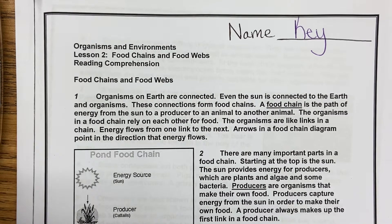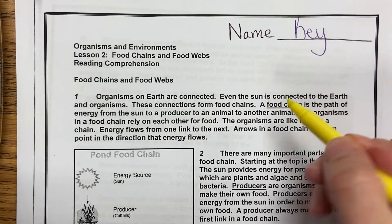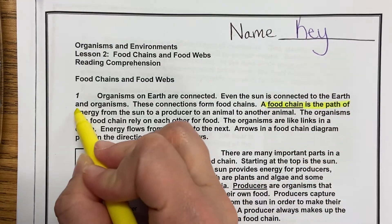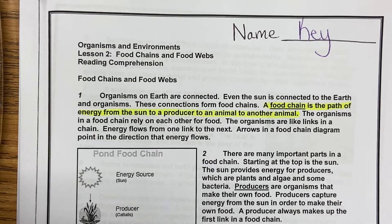The concept that we're working on this week is food chains and food webs, which is what I found a passage over. Paragraph one: Organisms on earth are connected. Even the Sun is connected to the earth and organisms. These connections form food chains. A food chain is the path of energy from the Sun to a producer to an animal to another animal. The organisms in a food chain rely on each other for food. The organisms are like links in a chain. Energy flows from one link to the next. Arrows in a food chain diagram point in the direction that energy flows. In this paragraph we had one vocabulary word — the definition of a food chain — so we're going to go ahead and highlight that one.